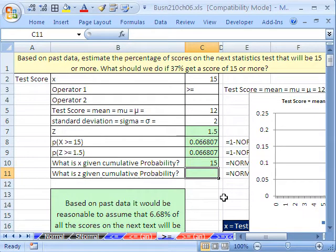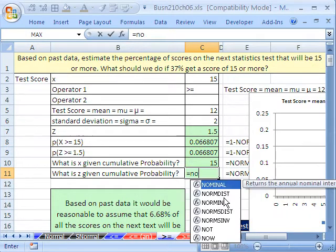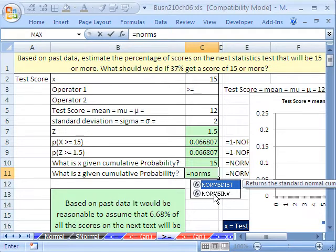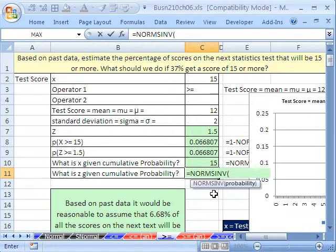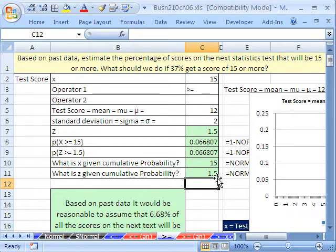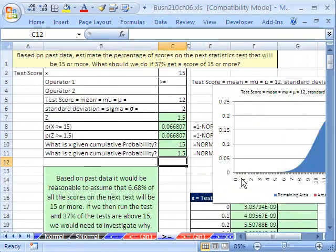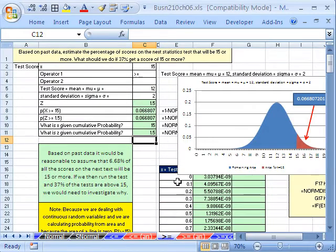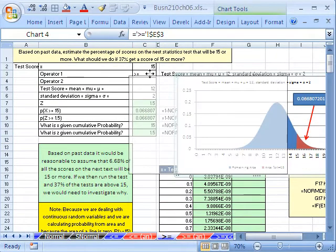What about with the NORMSINV? Equals NORMSINV. And we have two of them here. And we want the inverse, because we're going to give it the cumulative probability, and it'll spit out the z. 1 minus that right there, because it's on the upper end. And then Enter. 1.5.